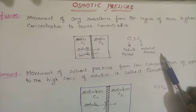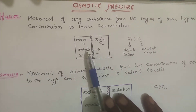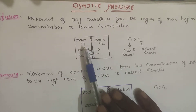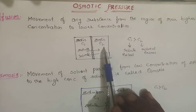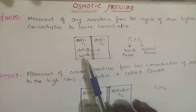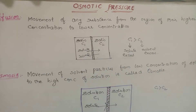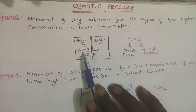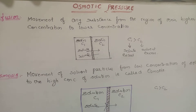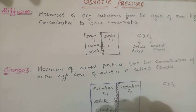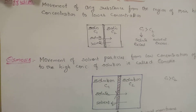Now, with respect to diffusion, you see movement of particles from higher concentration to lower concentration — particles move from C1 to C2. My question is: are solute particles moving from C1 to C2, or C2 to C1, or both? The answer is both. Solute particles move in both directions until the concentration in both compartments becomes equal.